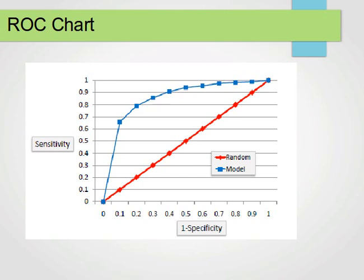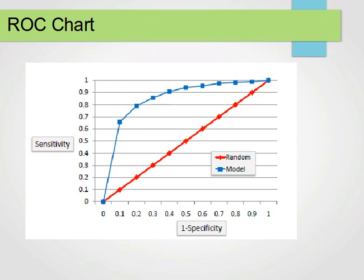And always remember, we're only dealing with binary classifiers here. Now, I gave an example on how to build or how to construct a ROC curve. We mentioned the idea of having actual and predicted classes. And we mentioned the idea of sorting things in descending order according to prediction probability.